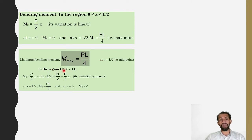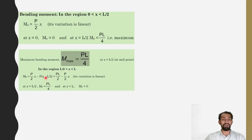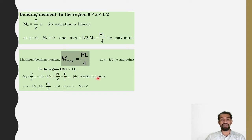In the region L by 2 to L, Mx equals Ra into x minus P into (x minus L by 2). X is in the region beyond L by 2 and less than L, and L by 2 is the distance to be deducted. This simplifies to P·L by 2 minus P by 2 into x. The variation is again linear: at x equals L by 2, Mx is P·L by 4 (maximum), and at x equals L, Mx equals 0.